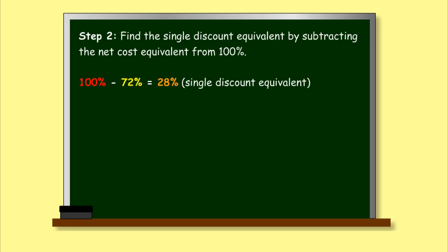Step 2. Find the single discount equivalent by subtracting the net cost equivalent from 100%.